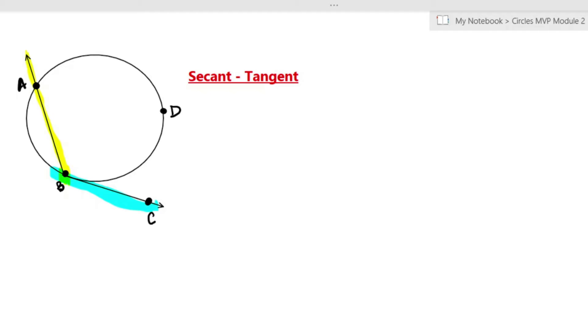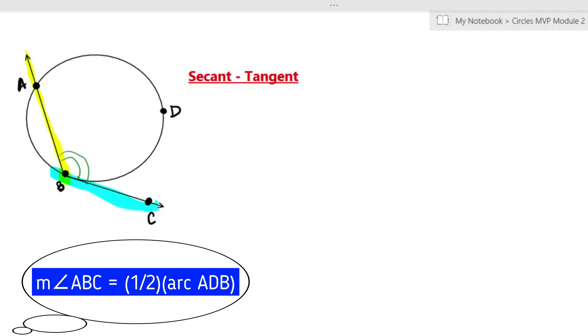Alright, so when that secant and tangent intersect on the circle, they create an angle. And the measure of that angle is equal to half the measure of the intercepted arc.